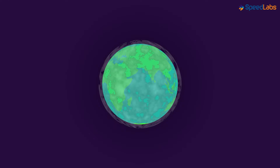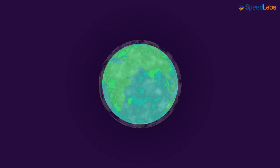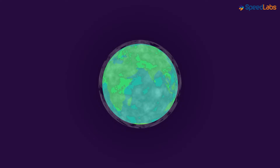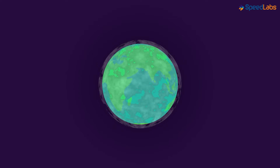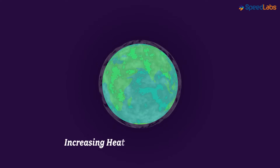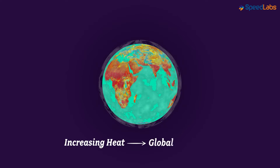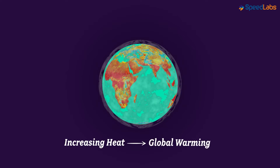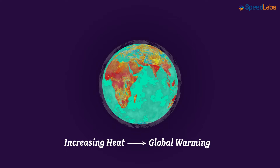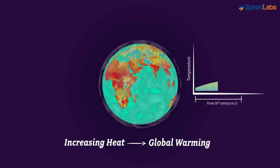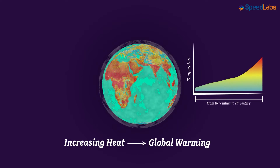Carbon dioxide cannot escape into space and, like many other harmful gases, it is creating a blanket of heat around the earth. This increasing heat has led to a famous phenomenon known as global warming, which is the cause of the increase in the temperature of the earth. According to studies, the last few decades of the 20th century have been the hottest in the last 400 years.